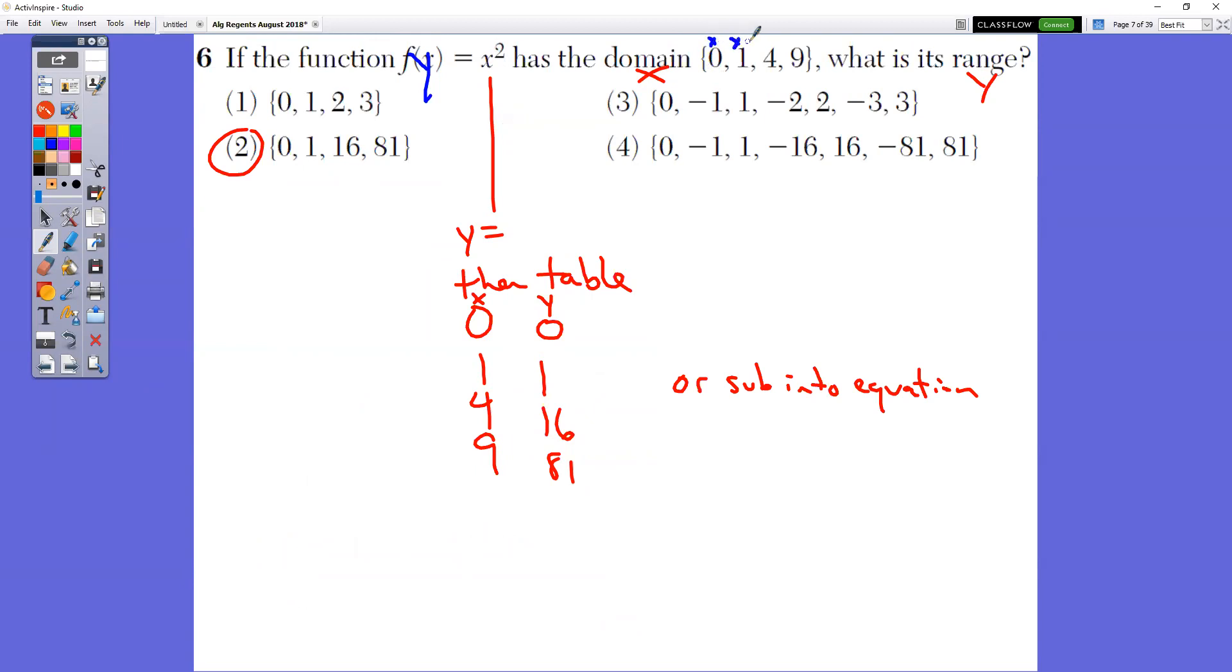So remember, these are all the x values. So what they want to know is what y values correspond to those numbers in the table. Well, when you type it into the second and table, you get 0, 1, 16, and 81 for those x values, which is choice two.